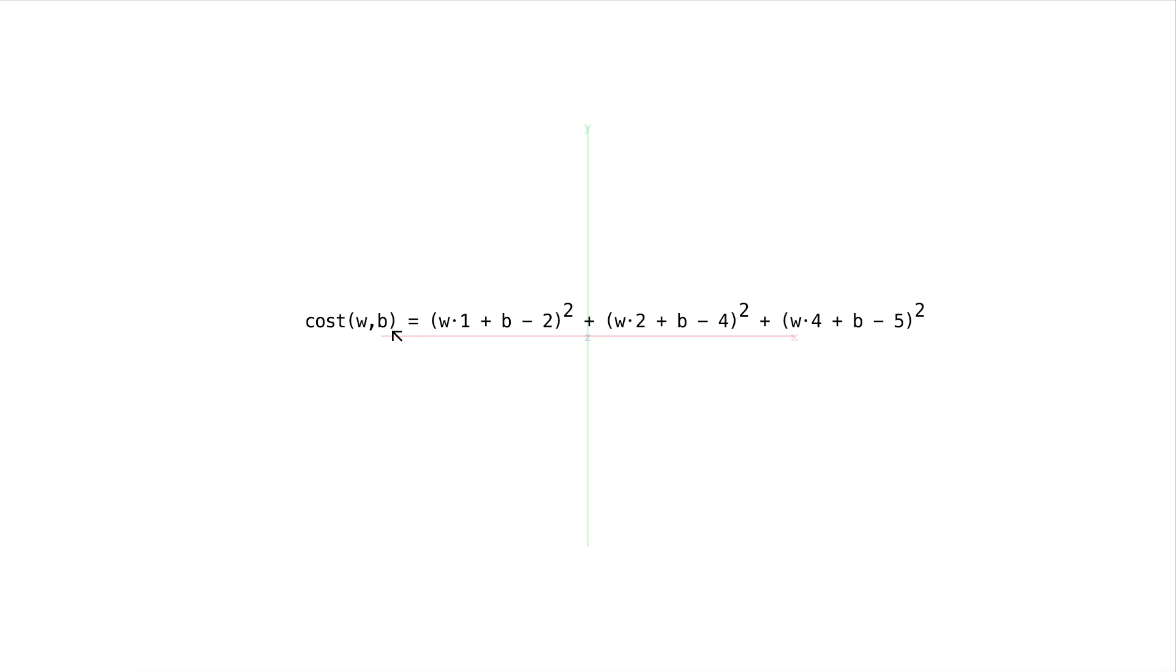Now you can see clearly that we have a function of two variables, our two parameters, w and b, and we could pick any random number for w and b, and when we simplify this we'll just get one number. So our cost we can think of as taking in two numbers and spitting out one number.